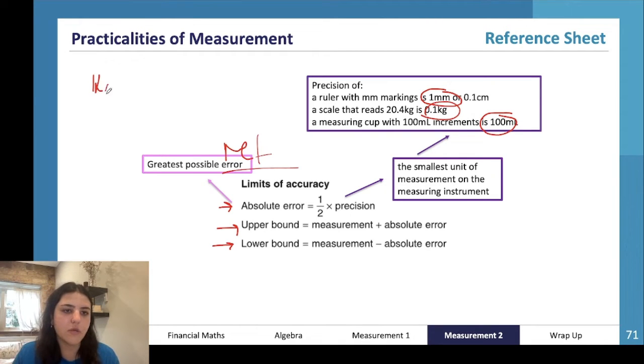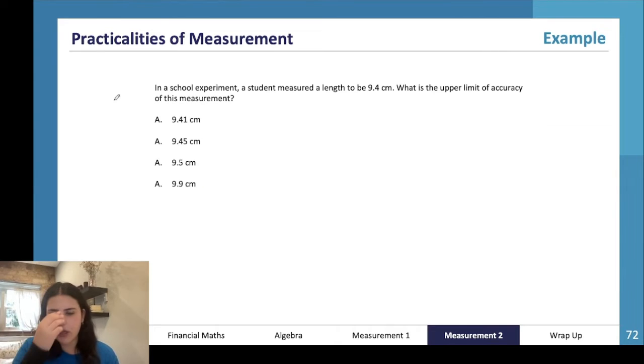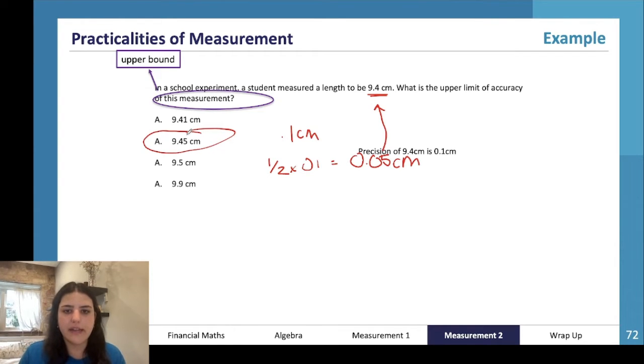Okay, in a school experiment a student measured a length to be 9.4 centimeters. What is the upper limit of accuracy of this measurement? Okay, so our precision here is 0.1 centimeters, which means that our absolute error is half times 0.1 centimeters, which means our absolute error is 0.05 centimeters. To find the upper limit we just add that 0.05 to 9.4, so our answer would be 9.45.